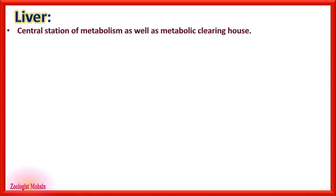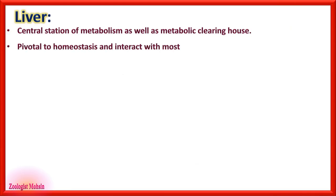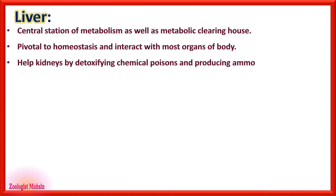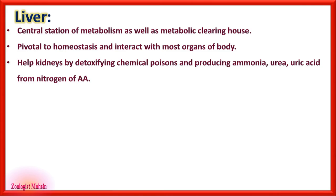The liver helps kidneys by detoxifying chemical poisons and producing ammonia, urea, and uric acid from nitrogen of amino acids. If asked which organ is pivotal to homeostasis, the answer is the liver, not the kidneys.